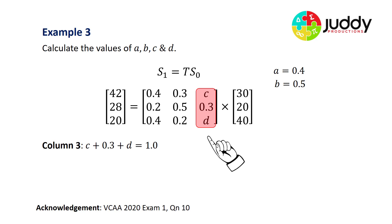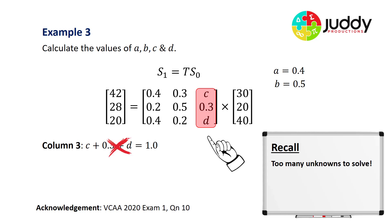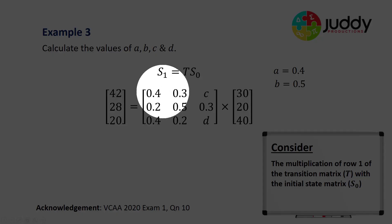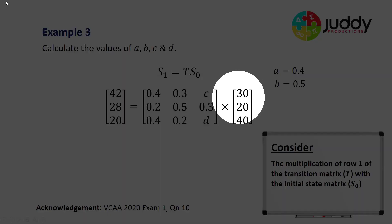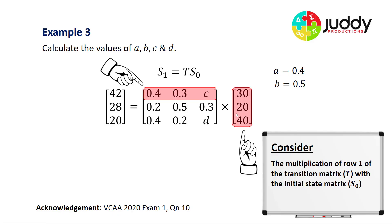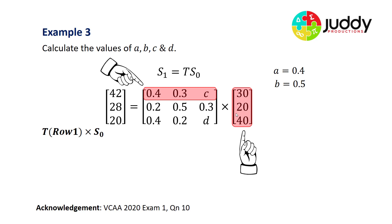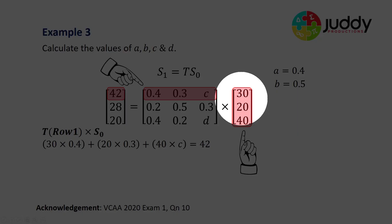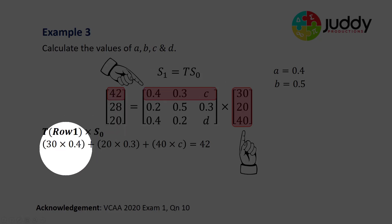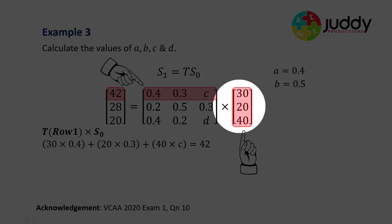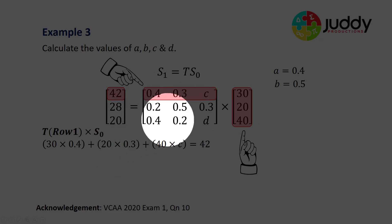Our final column tells us that C plus 0.3 plus D equals one. Unfortunately, we've got here too many unknowns to solve. I've got one equation with two unknown variables. We can't solve that, so we've got to look at another way to solve variable C and D. Let's consider the multiplication of the first row, the top row of the transition matrix, with the initial state matrix S0. Multiplying row one of the transitions with the initial state column matrix, we end up with 30 multiplying with 0.4, and we're adding to that the 20 multiplies with the 0.3, and finally the 40 multiplies with our variable C to give us 40C.